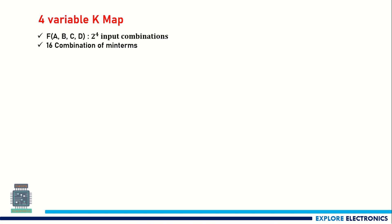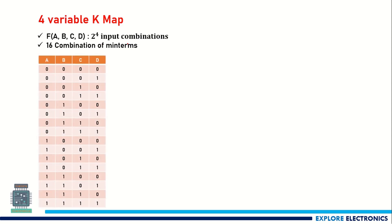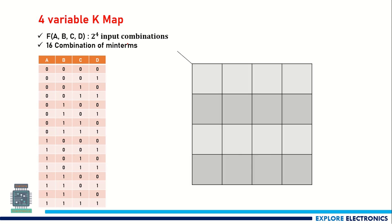In a four-variable K-map, as I said in the previous video, we will have four variables: f of A, B, C, D. We will have 2^4 = 16 input combinations. I am going to take A and B vertically and C and D horizontally, coded in the order 00, 01, 10, 11.